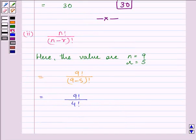Now we can express 9 factorial as 9 multiplied by 8 multiplied by 7 multiplied by 6 multiplied by 5 multiplied by 4 factorial.